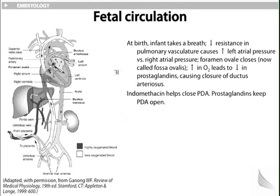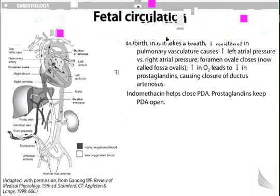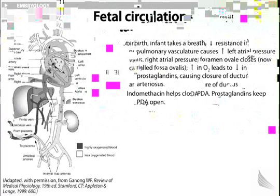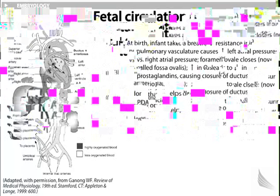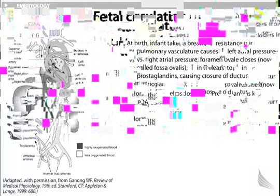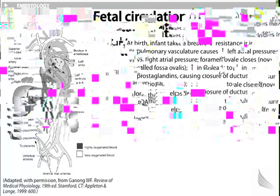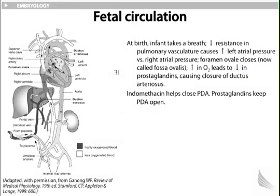At birth, the infant takes a breath. Decreased resistance in the pulmonary vasculature causes increased left atrial pressure versus right atrial pressure. The foramen ovale closes, now called the fossa ovalis. Increase in oxygen leads to decreased prostaglandins, causing closure of the ductus arteriosus. Therefore, indomethacin, a cyclooxygenase inhibitor that reduces synthesis of prostaglandins, helps to close a patent ductus arteriosus (PDA). Prostaglandin analogs, such as misoprostol, will help to keep the PDA open.